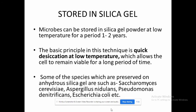This sterile soil method is used for sporulating microorganisms such as Penicillium. For storage in silica gel, microbes can be stored in silica powder at low temperature, where desiccation is carried out. Quick desiccation at low temperature allows the cells to remain viable for a long period of time.